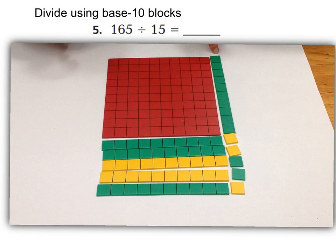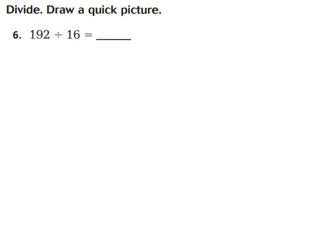Go ahead and write 11 in your book on question number 5. For question number 6, you're going to be drawing a quick picture similar to questions 1 and 2 on this page. Our goal is to have 192 divided by 16. Let's go ahead and sketch this out together. Take your pencil and make a flat piece — we all know this has a value of 100. I need to have 16 represented on this side because that's my divisor. So I have 10 right here.